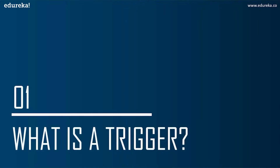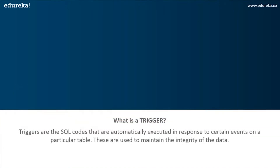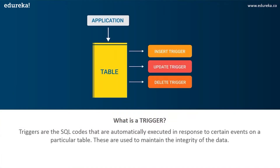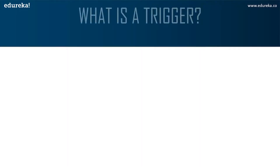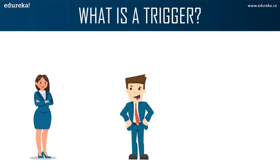The first topic is what are triggers. Triggers are SQL code that are automatically executed in response to certain events on a particular table. These are used to maintain the integrity of the data in a given table. A trigger in SQL works similar to a real-world trigger.